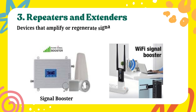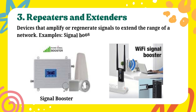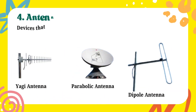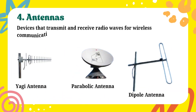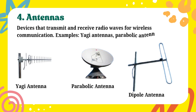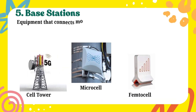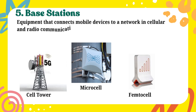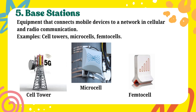3. Repeaters and Extenders — devices that amplify or regenerate signals to extend the range of a network. Examples: signal boosters, Wi-Fi extenders. 4. Antennas — devices that transmit and receive radio waves for wireless communication. Examples: Yagi antennas, parabolic antennas, dipole antennas. 5. Base Stations — equipment that connects mobile devices to a network in cellular and radio communication. Examples: cell towers, microcells.